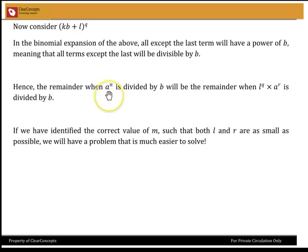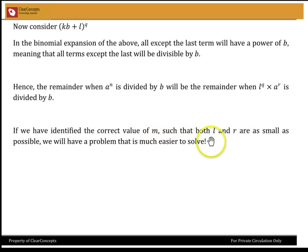We only need to consider the last term. So the remainder when A to the power N is divided by B is the same as the remainder when L to the power Q times A to the power R is divided by B. If we have identified the correct value of M such that both L and R are as small as possible, we will have a problem that's much easier to solve.